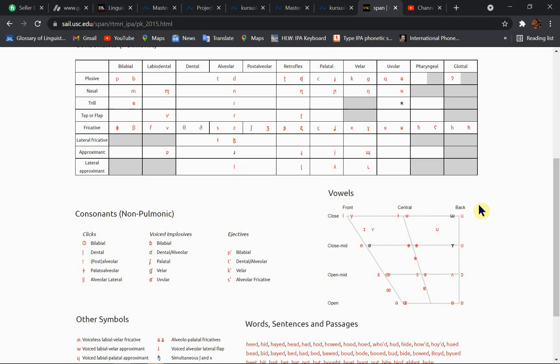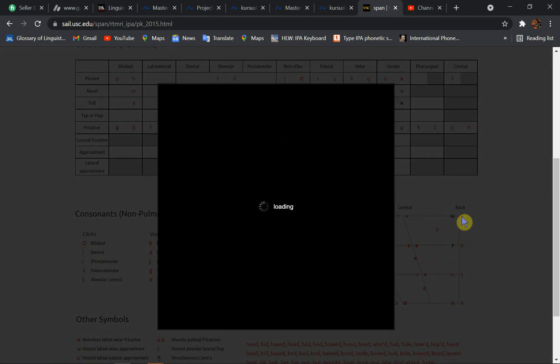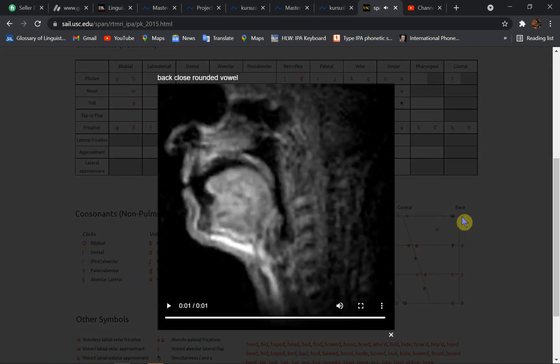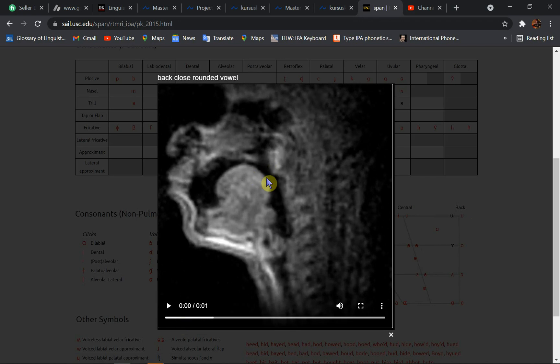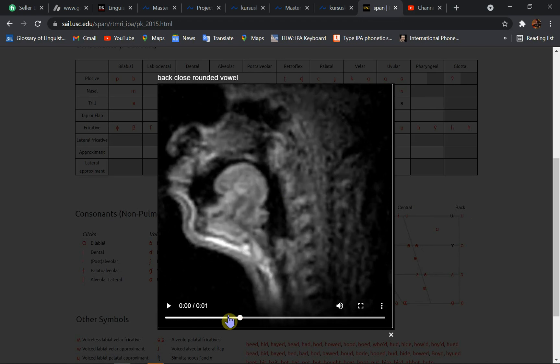Now, just look at a back vowel. You can easily notice the tongue is moving backward in the mouth. And once again, because U is the high back vowel, tongue is very close to the velar, velar position.